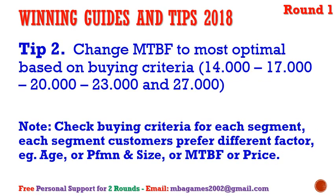Tip number two: change the MTBF to the most optimal level based on buying criteria. We have five product segments — check the Courier Report to find the mean time before failure for the most optimal setting. The recommended values are: 14,000 for low-end, 17,000 for traditional, 20,000 for size, 23,000 for high-end, and 27,000 for performance.